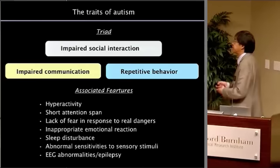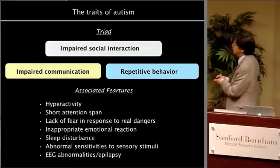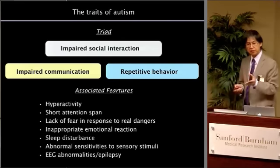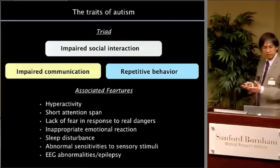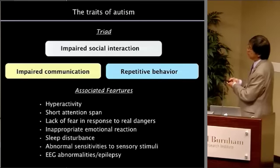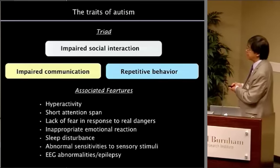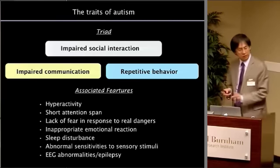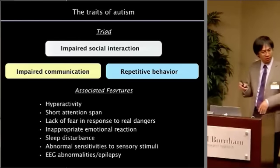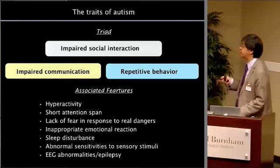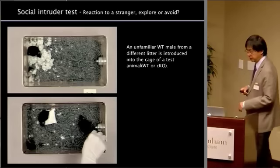It's pretty well-known — the so-called triad of autism. One is impaired social interaction, as suggested by the previous slide. The second one is impaired communication — of course, that refers to language communication. The third one is repetitive stereotypical behavior, such as flapping. There are also a couple of associated features in autism, such as hyperactivity, short attention span, and lack of fear in the face of real danger. The question is whether these mice show phenotypes that relate to these human symptoms.